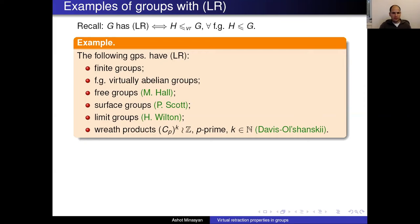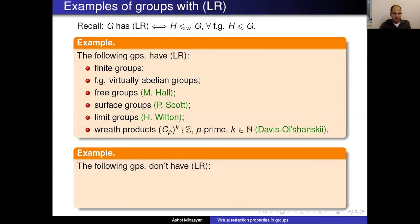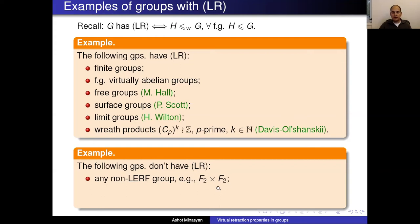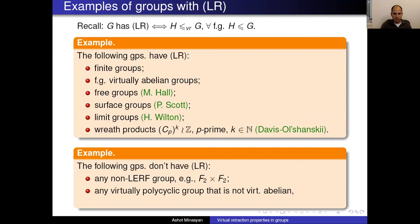Those are basically all examples I know of groups with LR. Now let me tell you which groups don't have LR. If you have a non-LERF group, then since LR implies LERF, any non-LERF group is an example. The easiest such group to discuss is F_2 × F_2: even though F_2 itself is a free group of rank two, the direct product of F_2 with itself no longer has the LERF property, and therefore doesn't have LR.